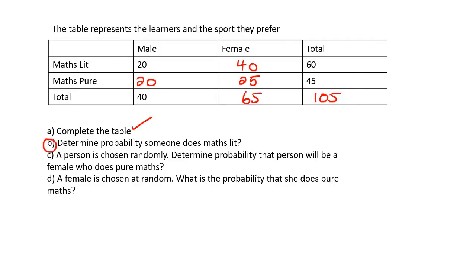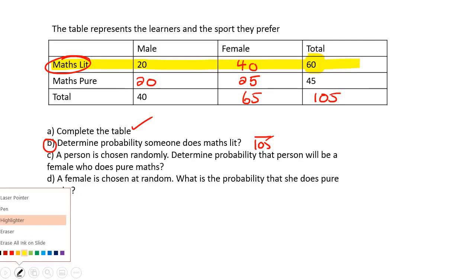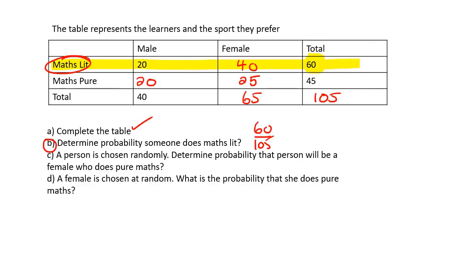The first question says: determine the probability that someone does maths literacy. They're not saying the person must be male or female — just that a person does maths lit. So out of the 105 people that we have, the maths literacy total is 60. So the probability is 60 out of 105, which simplifies to 4 out of 7.